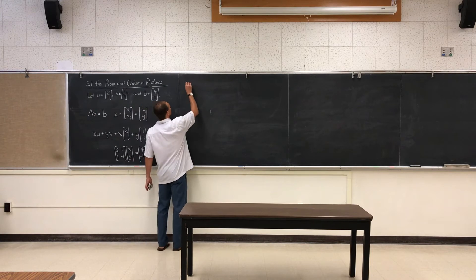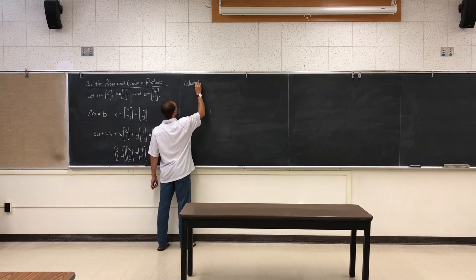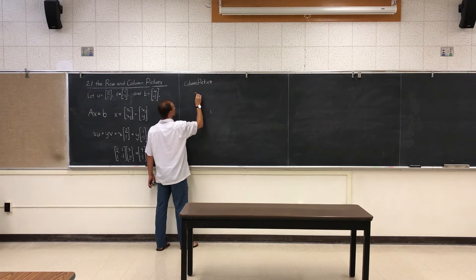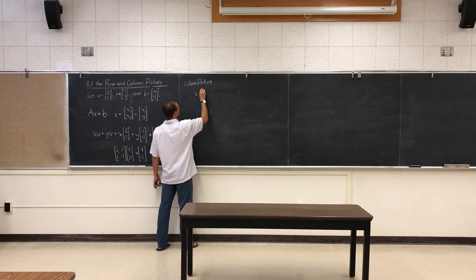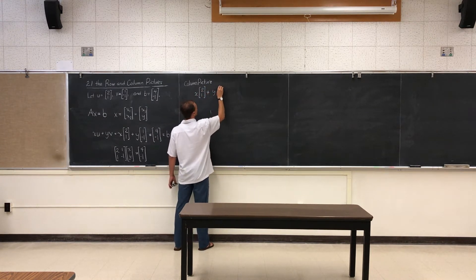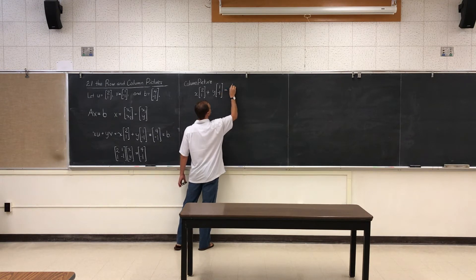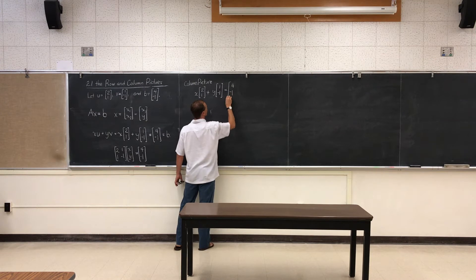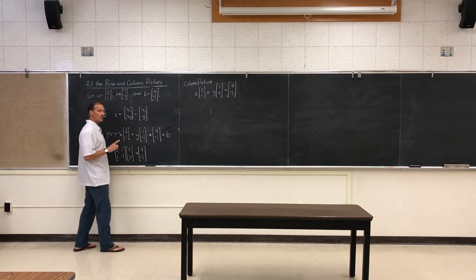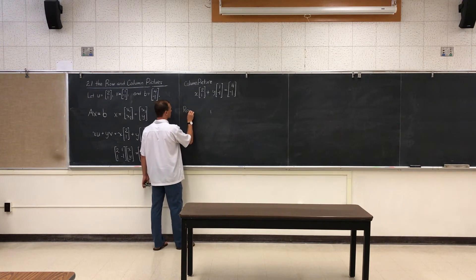The matrix equation is [2, 1; 1, -1] times [X; Y] equals B. So here's our matrix equation. We're going to look at it in two different ways. The first way is the column picture. The column picture is to look at the linear combination of X times (2, 1) plus Y times (1, -1) equals B which is (4, -1). That's one way to multiply AX equals B. The other way is the row picture.